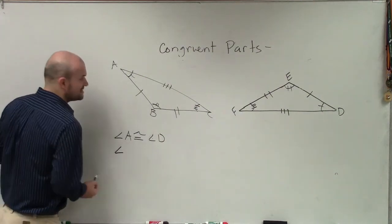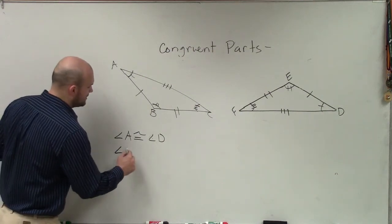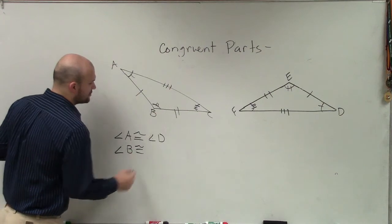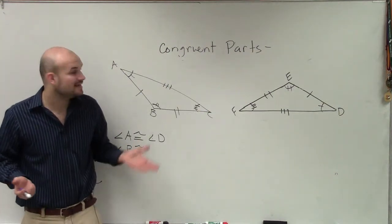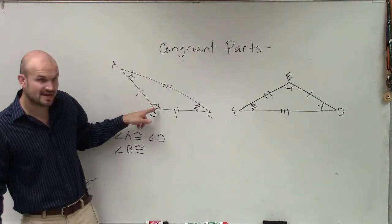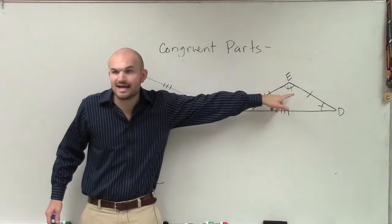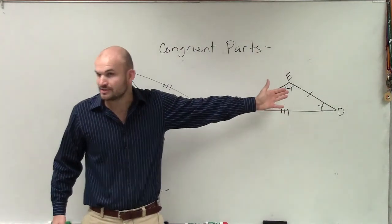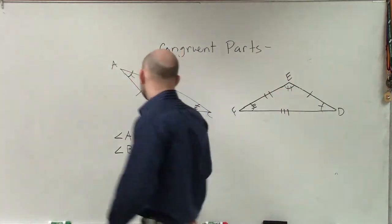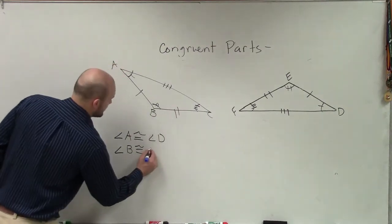So then, Samantha, if I still want to continue with this, if I say angle B, what would you say angle B is going to be congruent to over here on this triangle? Angle E. And the reason being is you can see this angle has two tick marks. That angle has two tick marks. Therefore, the measure of those two angles are congruent. So those are congruent parts.